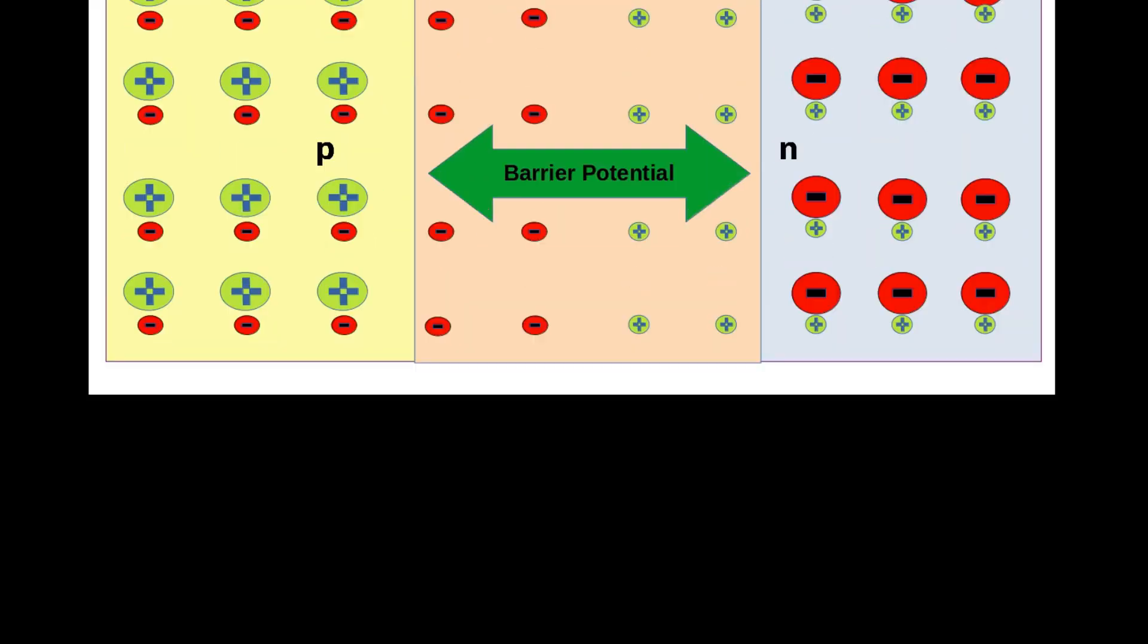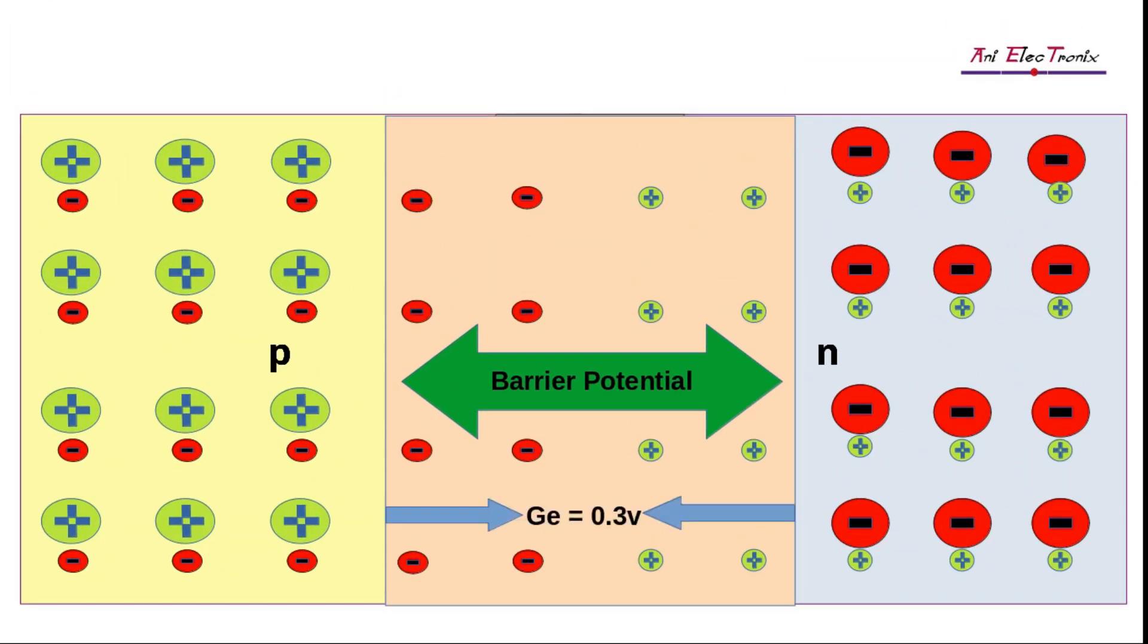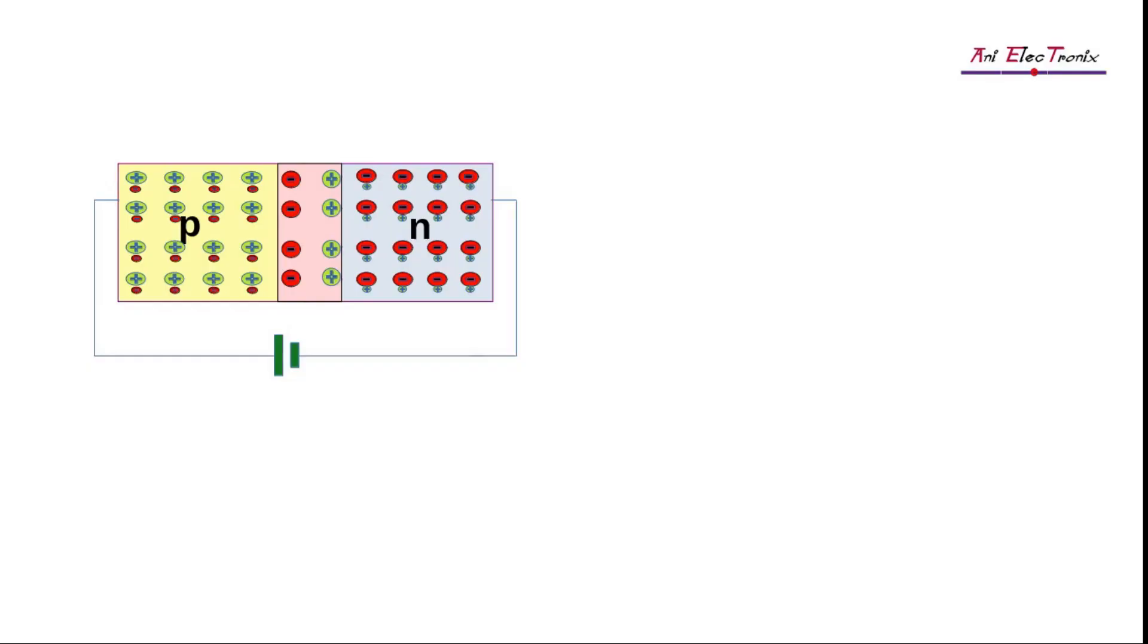At 25 degrees Celsius, the barrier potential of a germanium-made diode is 0.3 volts, while that of a silicon-made diode is 0.7 volts. While the P-N junction diode has not been subjected to any electric field impacts, it is referred to as an unbiased P-N junction diode and is denoted by the given symbol in electronics.